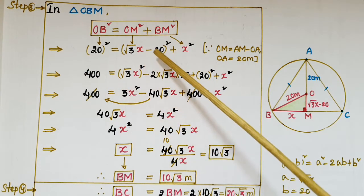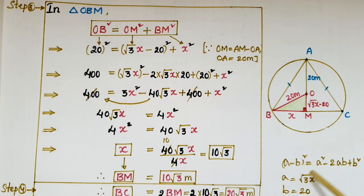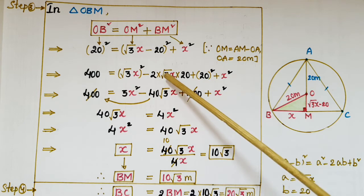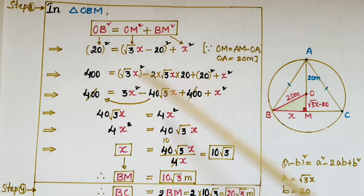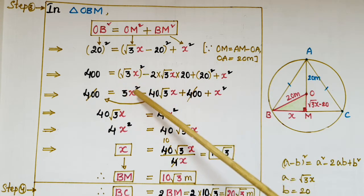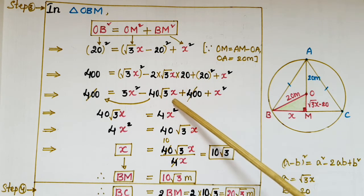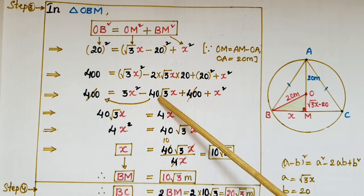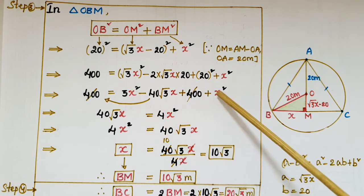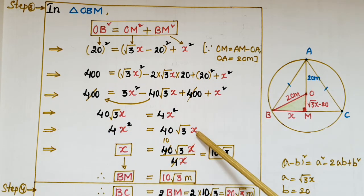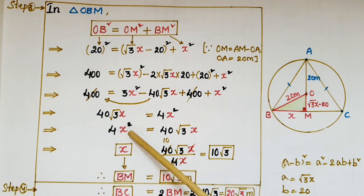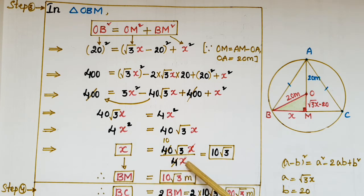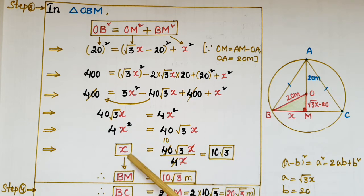Substituting: 20² = (√3x − 20)² + x². Expanding using (a − b)² = a² − 2ab + b², where a = √3x and b = 20: 400 = 3x² − 2·20·√3x + 400 + x². Cancel 400 from both sides: 0 = 4x² − 40√3x. So 40√3x = 4x², giving 4x · x = 40√3x. Dividing both sides by 4x: x = 10√3.